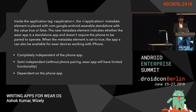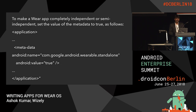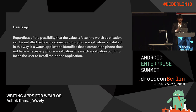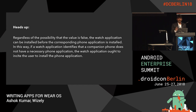Standalone apps can work like any other mobile phone application — completely independent of the phone app, semi-independent, or dependent. To make a Wear app completely or semi-independent, we use a metadata tag in our manifest file with the class path com.google.android.wearable.standalone. If we set this to true, it is a standalone app. Note that regardless of whether the value is false, the watch app can be installed before the corresponding phone app, and the app should prompt the user to install the phone application if needed.